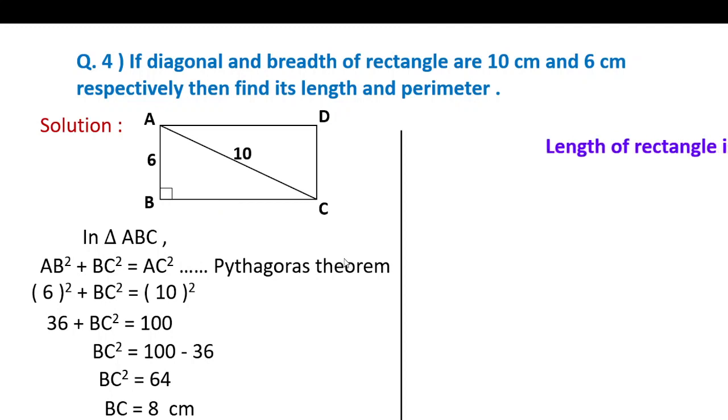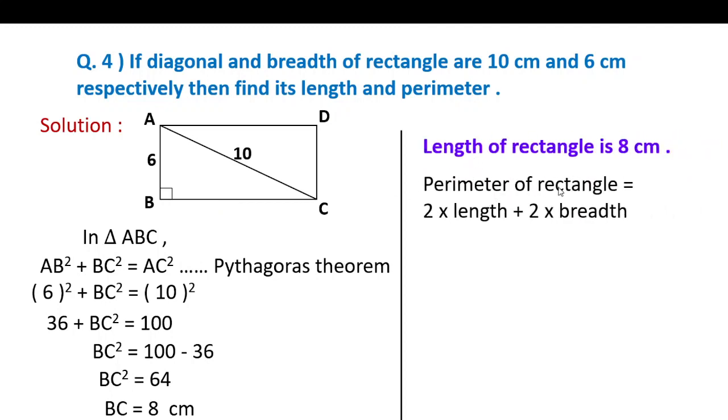BC we found is 8, the length is 8. Now find the perimeter. Perimeter formula: perimeter is equal to 2 times length plus 2 times breadth. Opposite sides are congruent so we multiply by 2. Length we found is 8 cm, so 2 into 8, and breadth given is 6, so 2 into 6. 2 times 8 is 16 and 2 times 6 is 12. Add them: 16 plus 12 is 28. Therefore perimeter of rectangle is 28 cm.